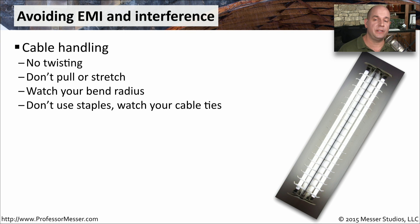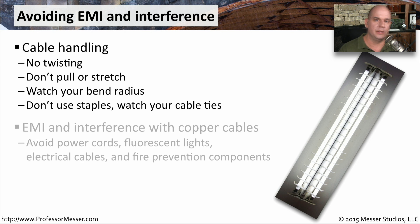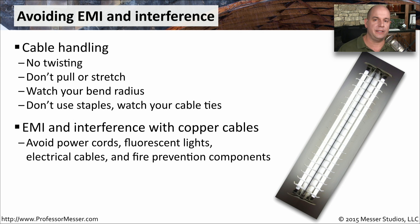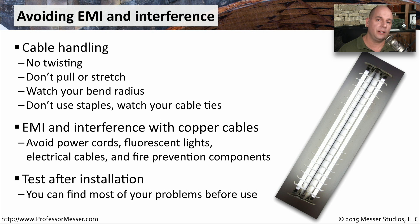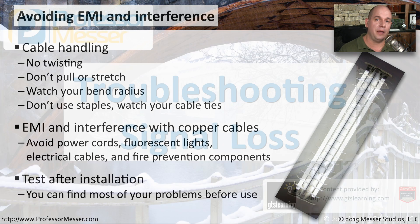Both copper and fiber have very specific handling requirements. You want to be sure you're not twisting these cables, and you don't want to pull or stretch them as you're putting them into a ceiling or under a floor. You want to be very careful of the bend radius — even with copper, be sure you're not exceeding the bend radius for that particular wire. Do not use staples on your ethernet or fiber. Do not use cable ties if at all possible, because those will tend to crimp if pulled too tightly on those cables. Another concern we sometimes don't think about are external sources of interference. Electromagnetic interference can be caused by power cords, fluorescent lights, and electrical cables. There may also be fire prevention components putting off electromagnetic interference. This is not as big a problem with fiber, but since so much of our networks run over copper connectors, we want to avoid any cases of EMI. If you really want to be sure, run your wire, add your connectors, bring in your cable tester, and it will tell you if your cables are working to specification.